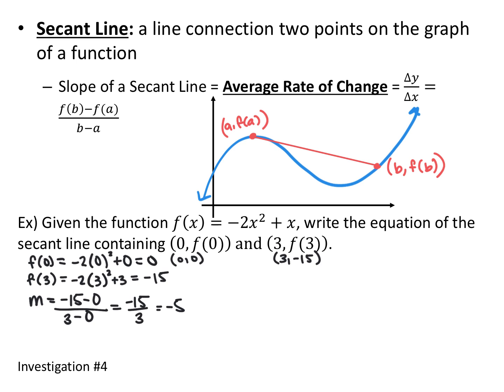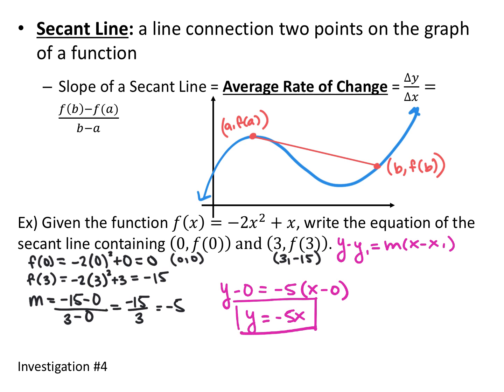We'll find equations of lines later in the year, but we use point-slope form a lot: y - y₁ = m(x - x₁), where you can pick either of your coordinate pairs. Since one point is (0, 0), we get y - 0 = -5(x - 0), which simplifies to y = -5x. This is the equation of the secant line of f(x) between x = 0 and x = 3.